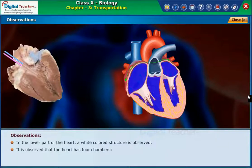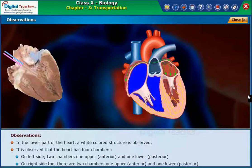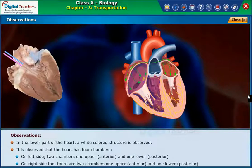It is observed that the heart has four chambers. On the left side, there are two chambers — one upper anterior and one lower posterior. On the right side too, there are two chambers — one upper anterior and one lower posterior.